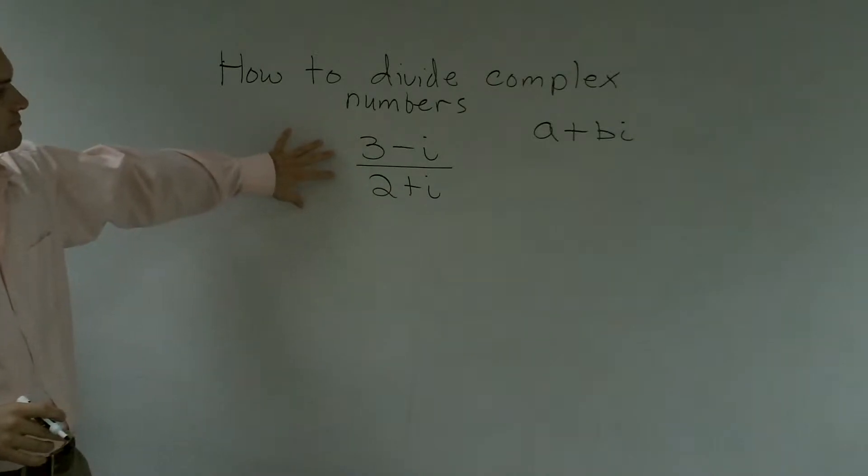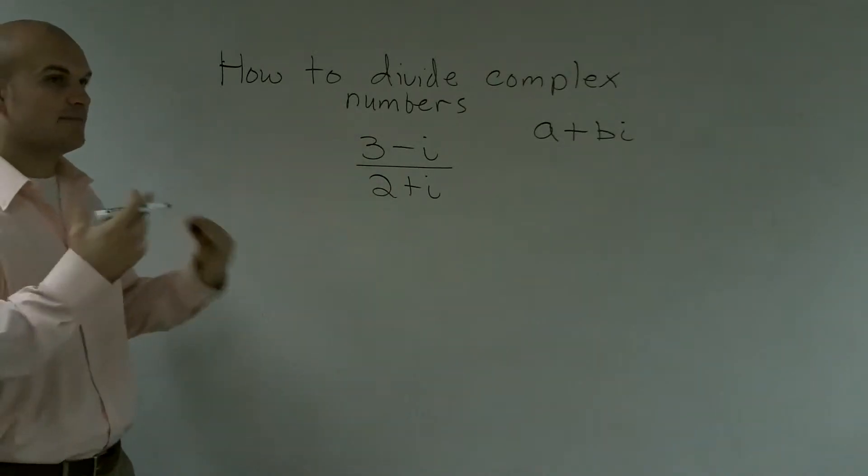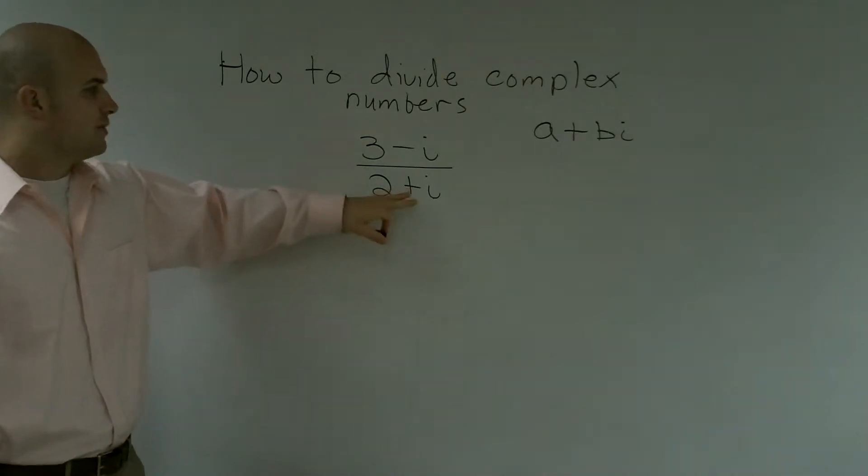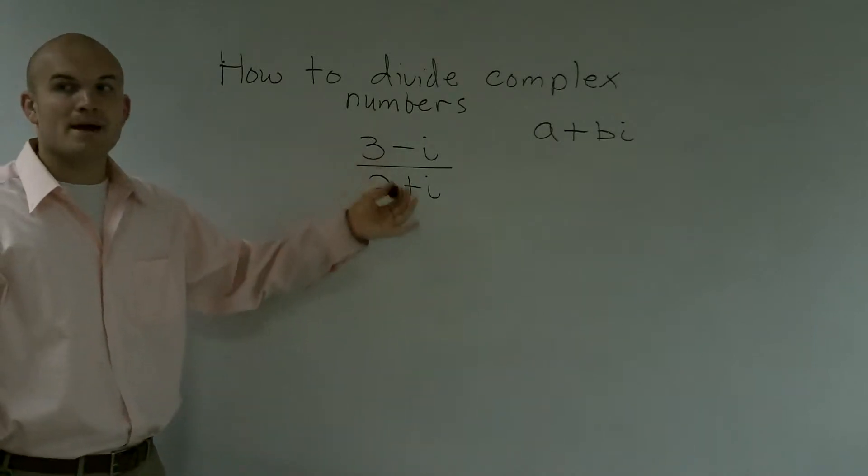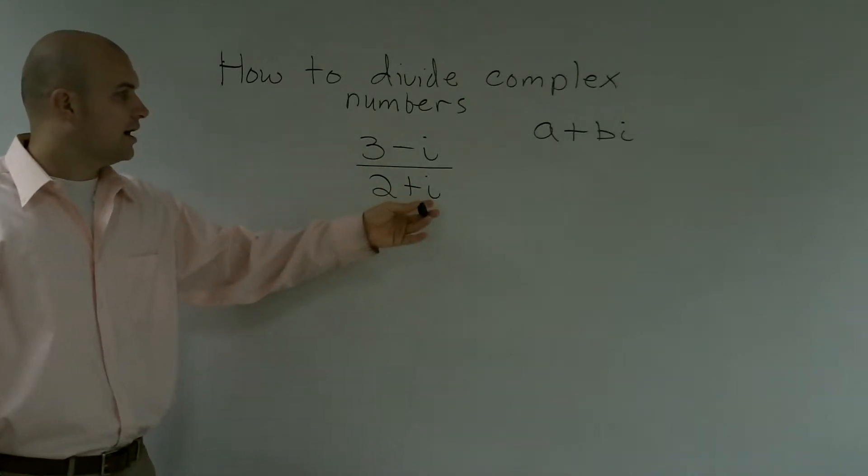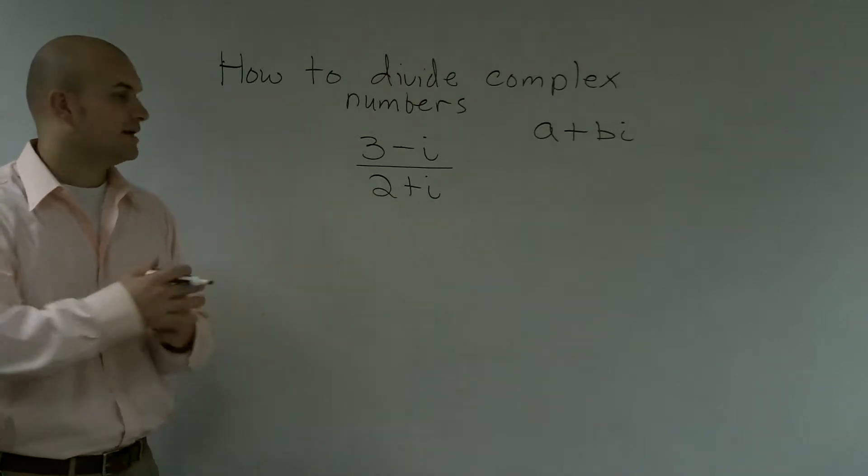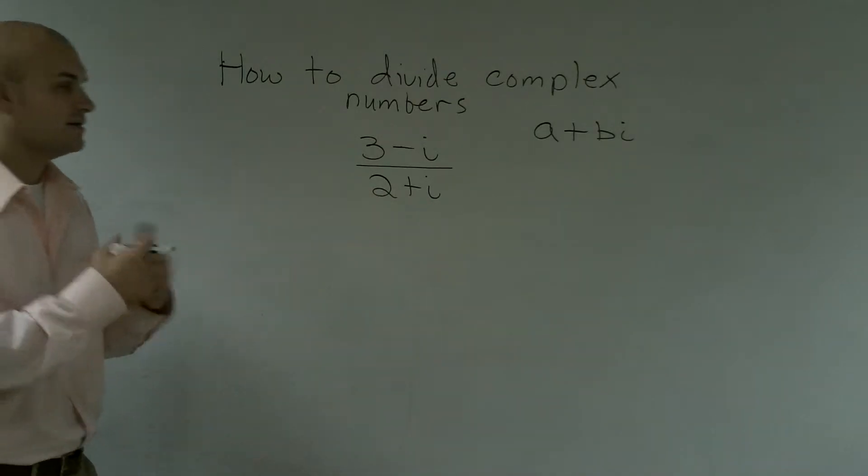So when solving this complex number, the main important thing, what we want to think about doing, is you want to get the i, or our imaginary number, off of the bottom. So to get this off the bottom, what I know is, I'm going to want to multiply by my conjugate.